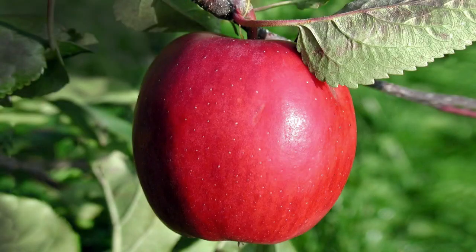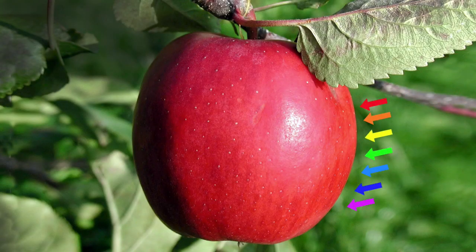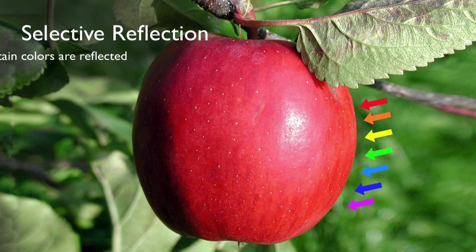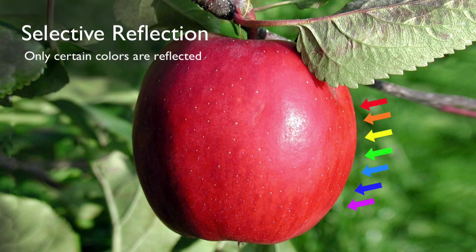Here's an apple, illuminated by the sunlight, which shines with all colors of the rainbow. Since the apple is getting hit by all the colors, why is it only red? The answer is what we call selective reflection, where only certain colors are reflected. The pigments of the apple's skin have a chemistry that causes the red light to reflect back outward toward our eyes. The same pigments also have a chemistry that absorbs all the other colors.